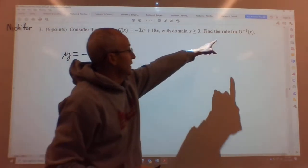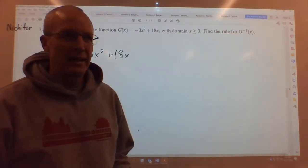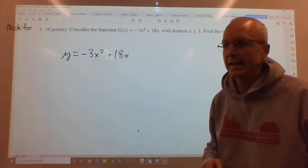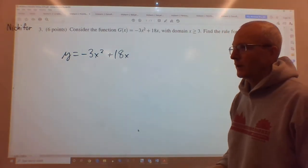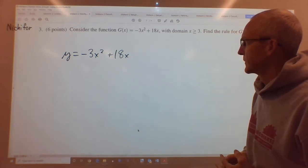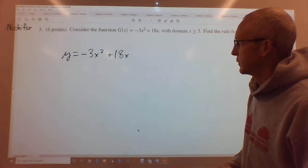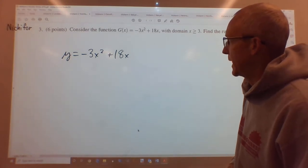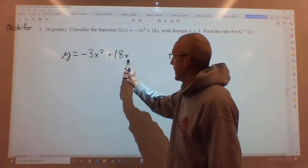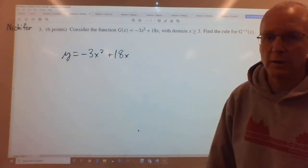Now they say g inverse of x. We could right now switch the x's and y's or leave it as a function of y and switch it later. It doesn't really matter. So let's just leave it like this now and we're going to solve for x. We want to know what x is as a function of y. But we have an x squared and an x, and we want x, so we know we're going to probably use a quadratic formula.